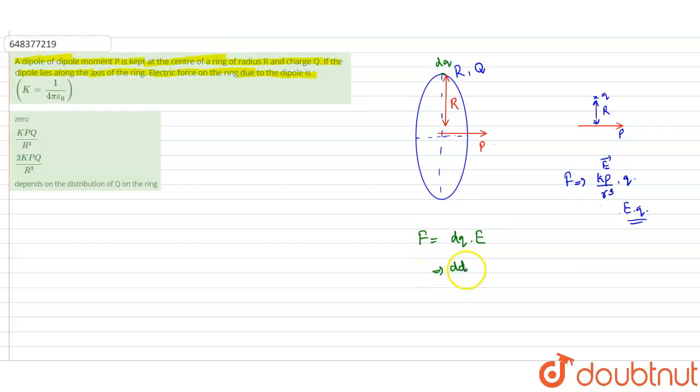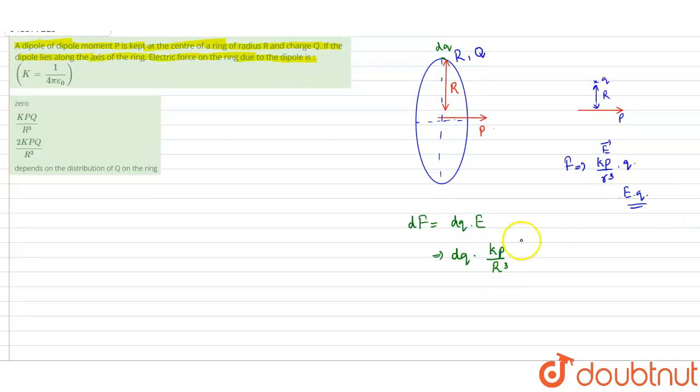That is dq, so this will be df, so it will be dq into kp by r cubed. So this will be df.